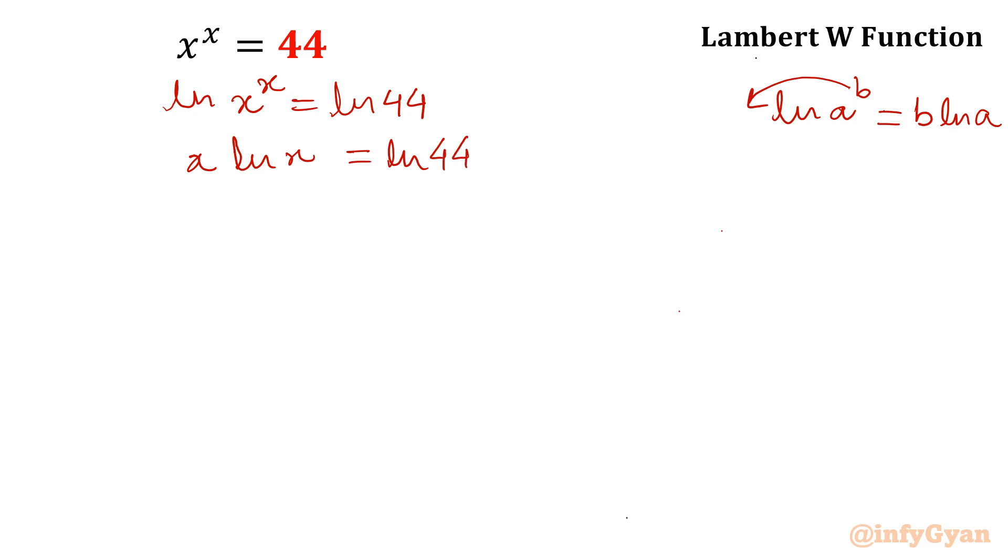What I will do I will write x as e raised to the power ln x. Why? Because we know that if x e raised to the power x form equal to a, then using Lambert W function we can write this as x equal to W(a). Do you know how it is mapped actually? How this function is mapped with its value?